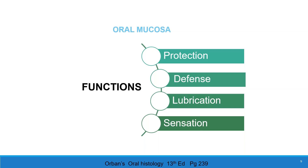Lubrication: salivary glands keep the oral cavity moist, which helps in speech and mastication. Sensation: oral mucosa is sensitive to touch, temperature, and pressure, and the tongue is covered with taste buds. Various reflexes are generated such as swallowing, gagging, retching, and salivation.